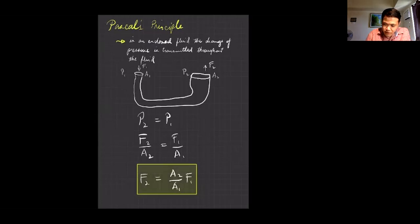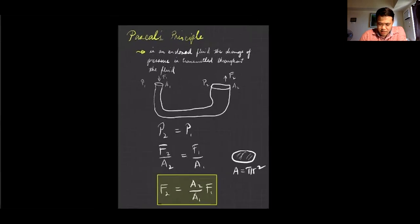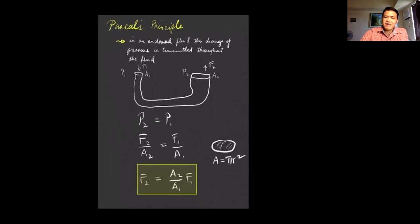So our area here if it's cylindrical, so the area can be for a circle, pi r squared. So that's a formula for the area. So sometimes if you encounter physics problems you have to know the area pi r squared. And this principle, Pascal's principle, has a lot of applications.